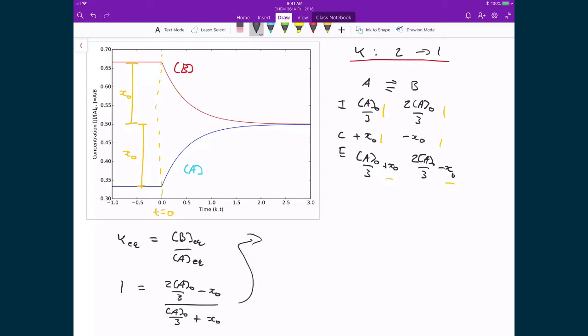I multiply both sides by this denominator, and so what I get is concentration of A0 over 3 plus X0, and that's equal to 2A0 over 3 minus X0. I then continue and solve. I'm going to move this minus X0 on the right-hand side to the left-hand side, this A0 over 3 over to the right-hand side, so I'm going to get 2X0 is equal to 2A0 over 3 minus A0 over 3, which means I have X0 is equal to A0 over 6.